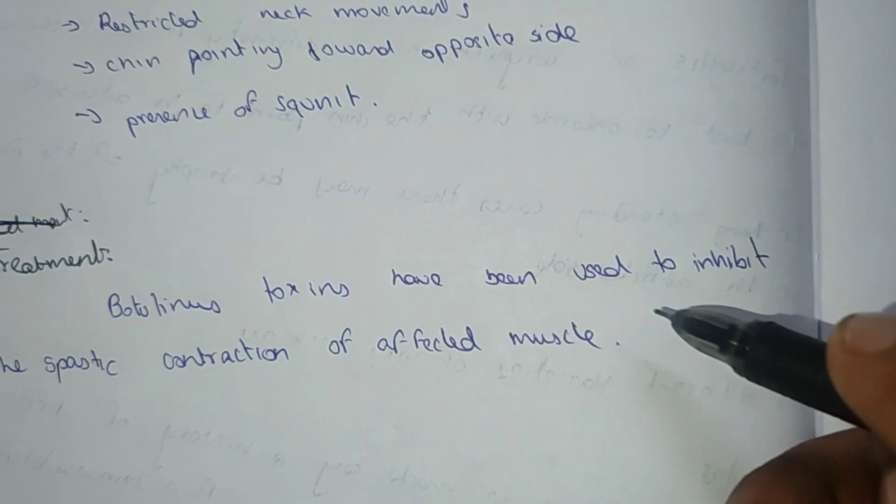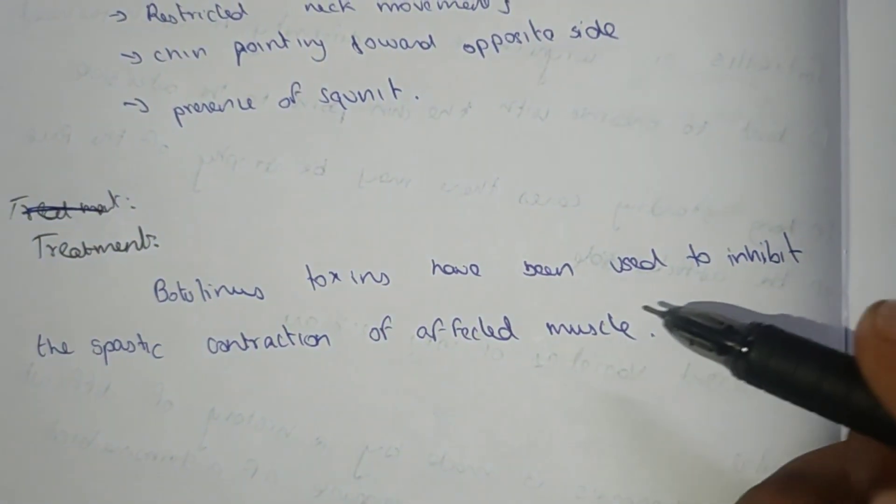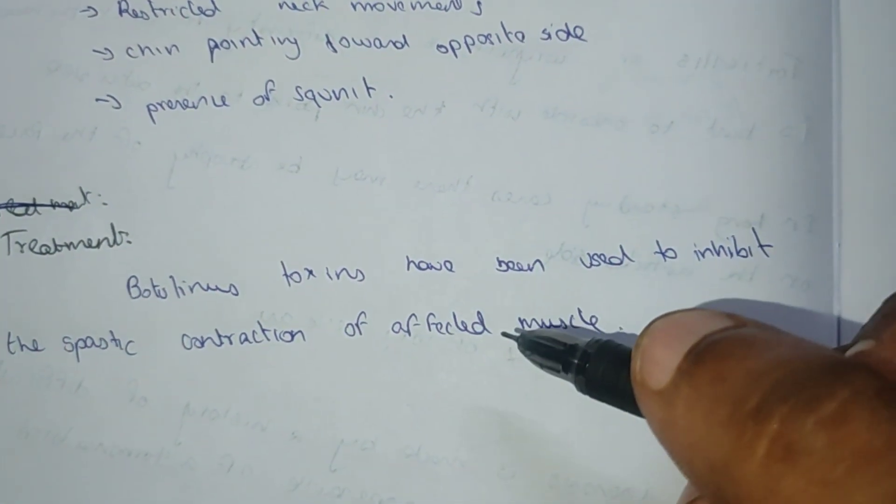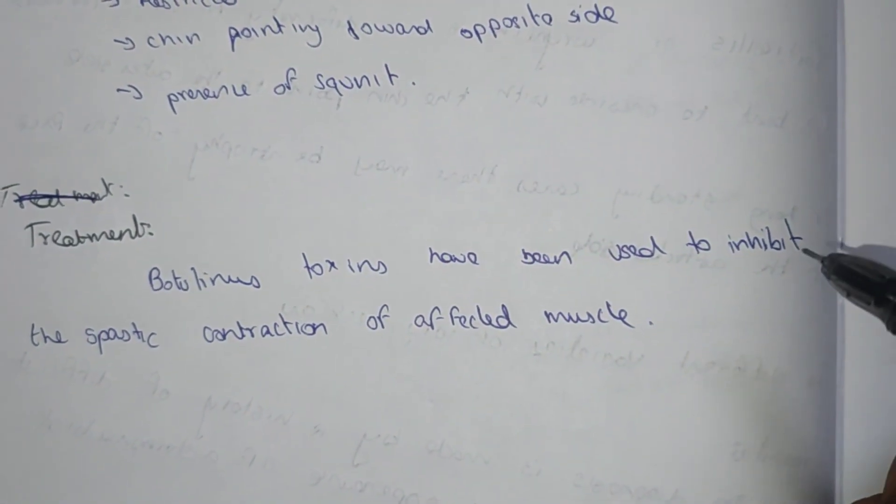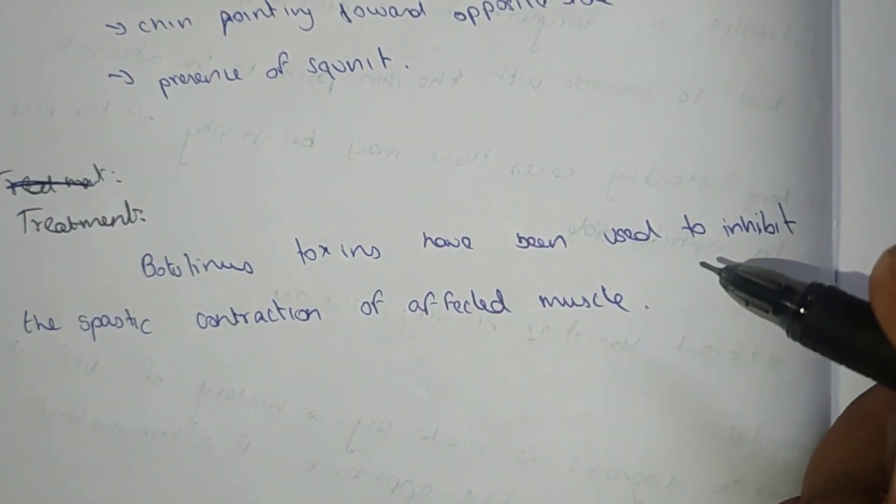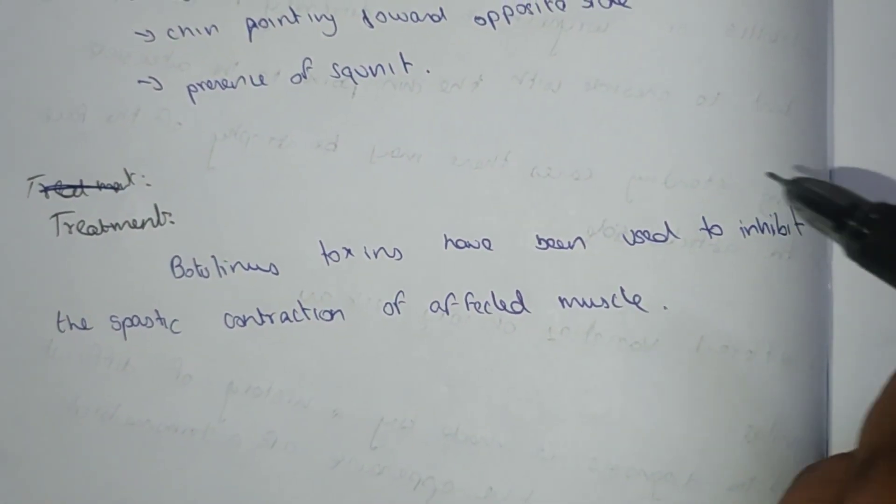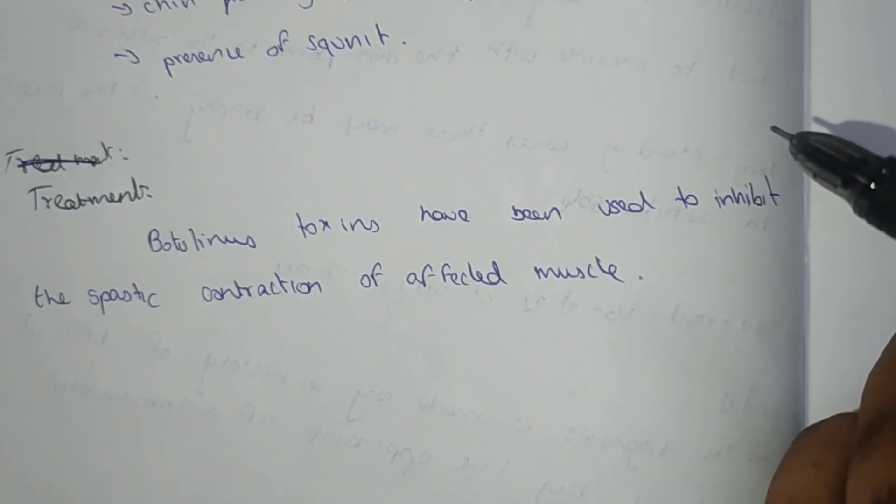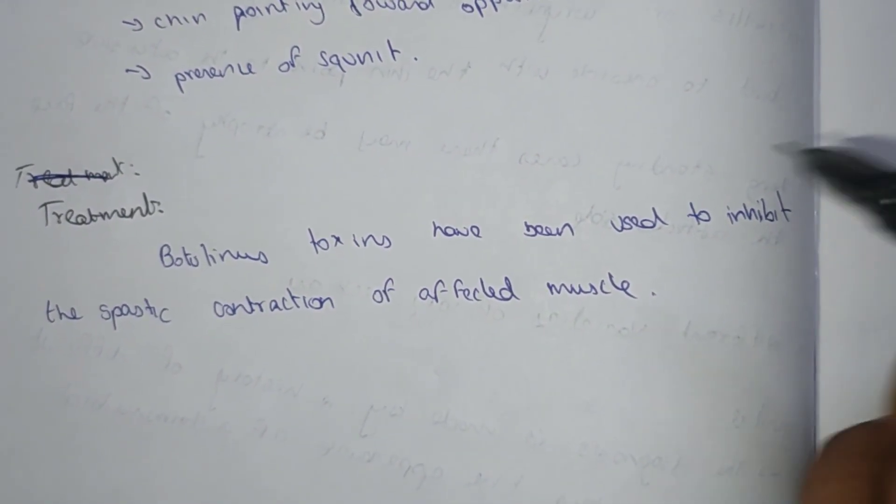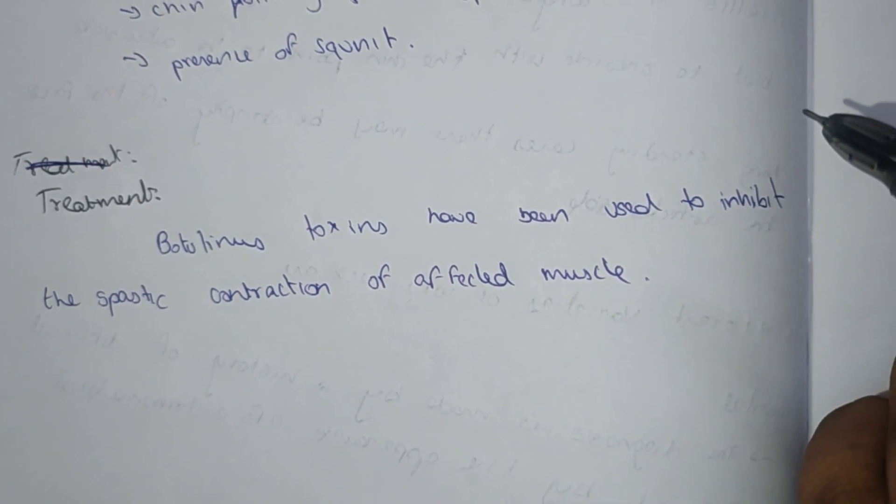Treatment includes botulinum toxins, which have been used to inhibit the spastic contraction of the affected muscle. Botulinum toxins are used when one side muscle contracts excessively.